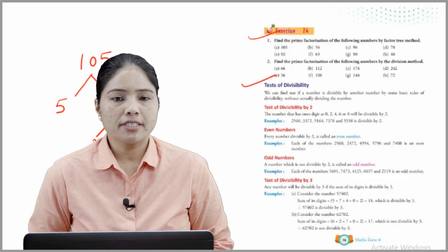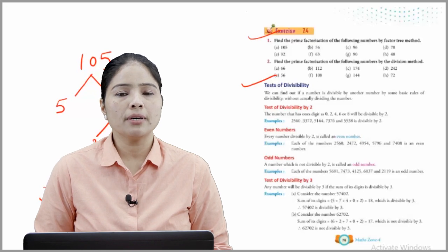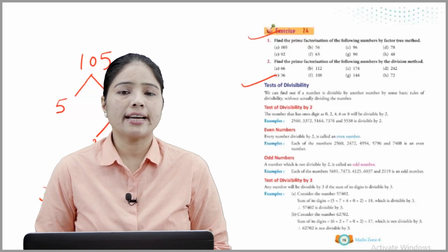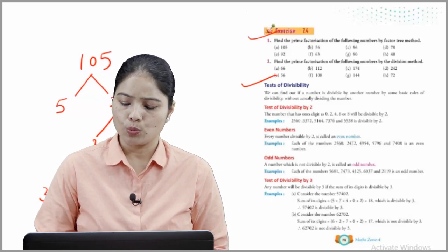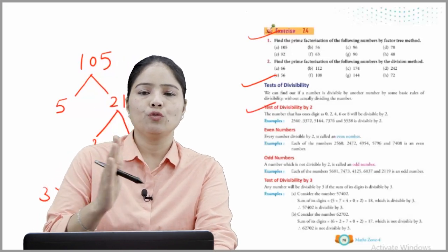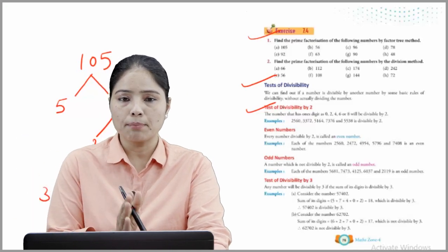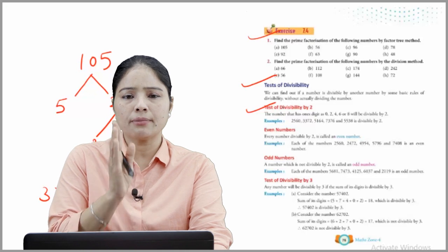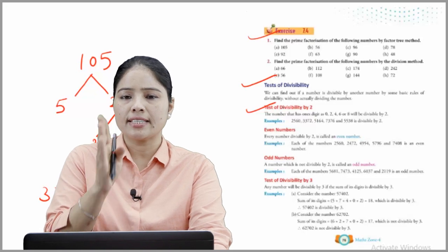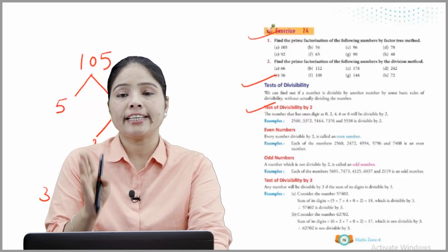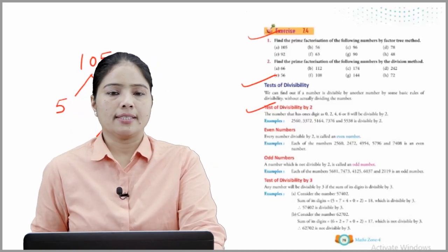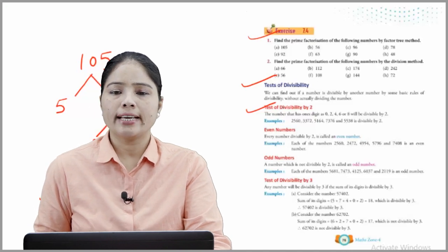Next, tests of divisibility. We can find out if a number is divisible by another number using basic rules without actually dividing. Test of divisibility by 2: A number whose ones digit is 0, 2, 4, 6, or 8 will be divisible by 2. Examples: 2560 (ones digit 0), 3372 (ones digit 2), 51640 (ones digit 0), 73376 (ones digit 6), and 5538 (ones digit 8) are all divisible by 2. Every number divisible by 2 is called an even number.